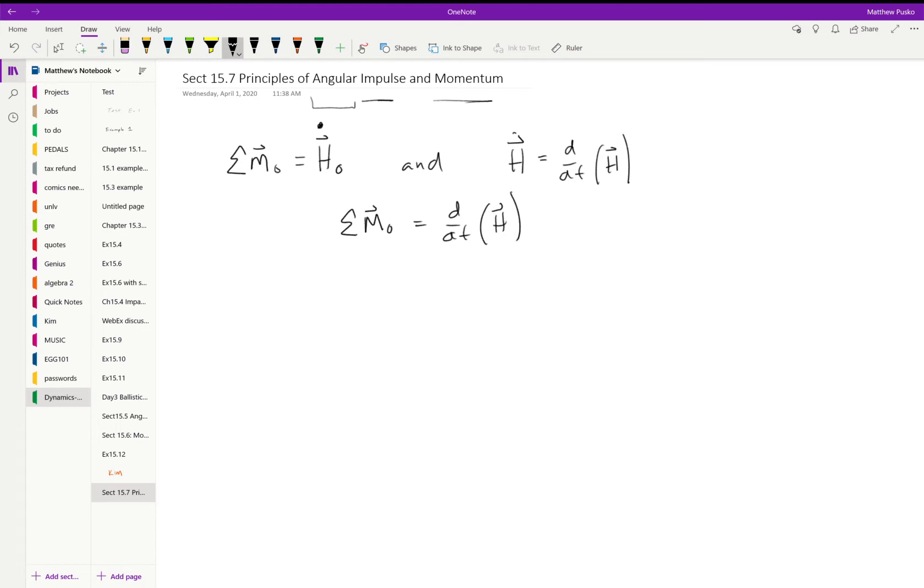So let's go ahead and put two and two together, and I'm sure after all the derivations we've done some of you can see where I'm going to go with this. Let's move that DT over to the other side, so I get the summation of the moments about O DT is equal to D - let's hold on to that O - dH about O.